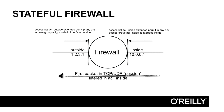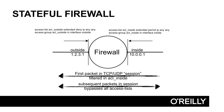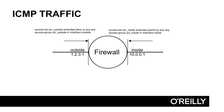That traffic must be allowed in the access list ACL_outside. The return traffic coming back is bypassed by all access lists, so we don't have to open for that traffic on ACL_outside. That's because this firewall is stateful and understands that the SYN traffic in one direction and the SYN-ACK traffic in the other direction, and all subsequent packets, are in the same flow. Only the first packet in each session is filtered in access lists; subsequent packets in the same session are bypassed.